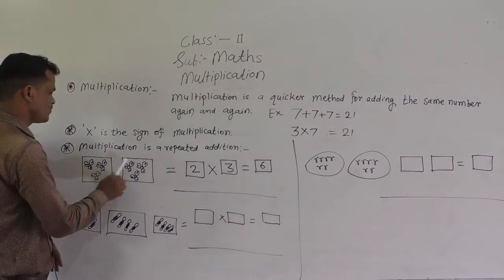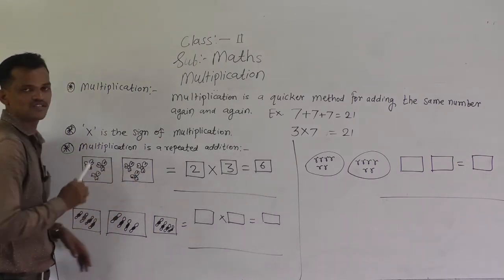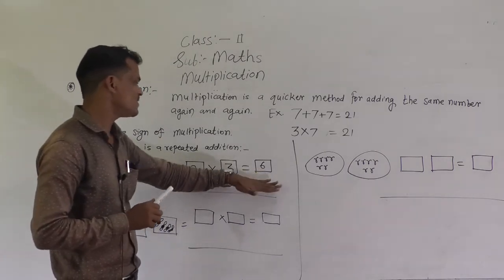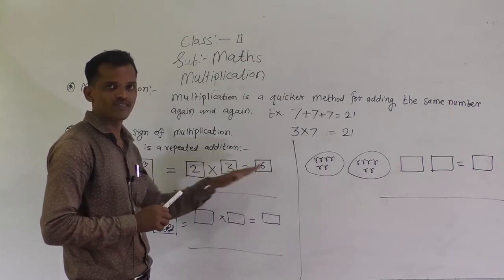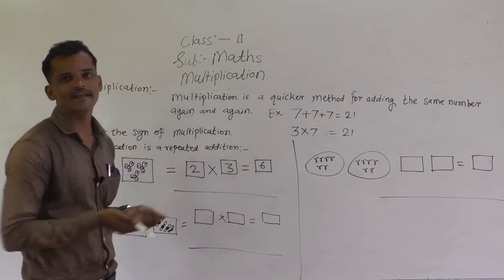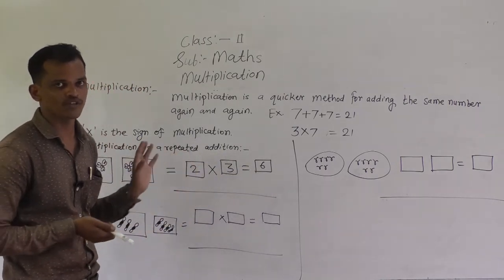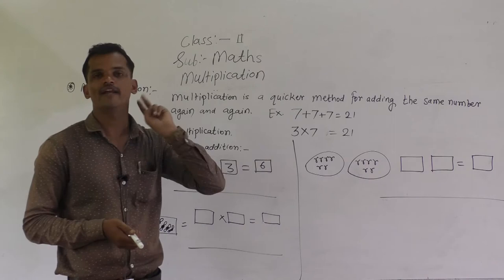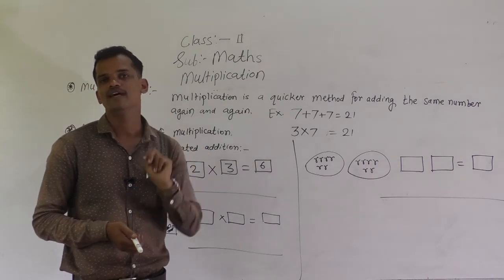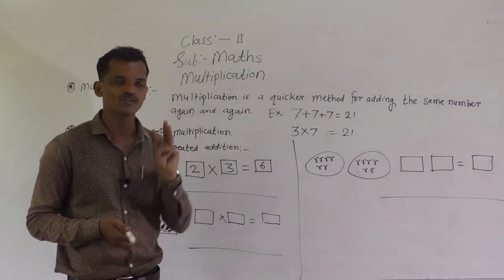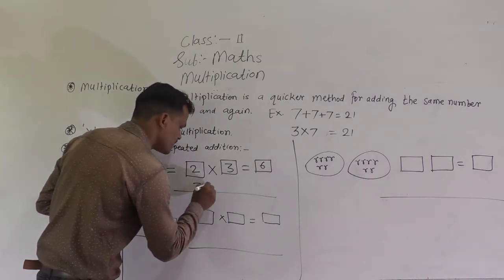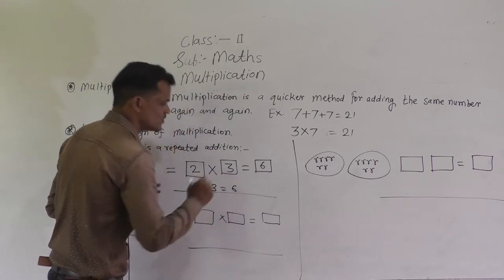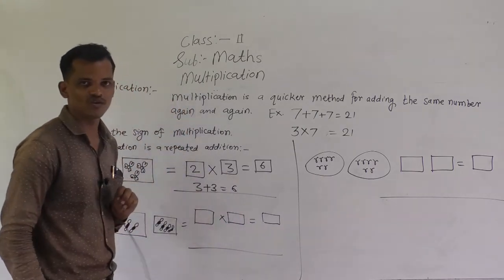This is the multiplication fact. Now you can write the addition fact for this. How many groups are there? 2 groups, and in each group there are 3 flowers. So write: 3 plus 3 is equal to 6.